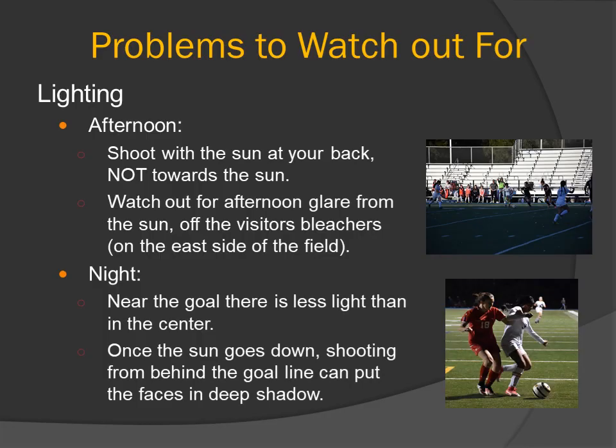Problems to watch out for — lighting. In the afternoon, shoot with the sun at your back, not towards the sun. Watch out for afternoon glare from the sun off the visitors' bleachers on the east side of the field: the sun reflects off the bleachers and the camera's meter reads too bright, darkening the picture so everybody on the field looks dark. At night, near the goal there is less light than in the center, and shooting from behind the goal line can put faces in deep shadow, as shown in the bottom right picture.